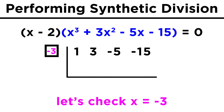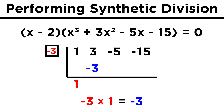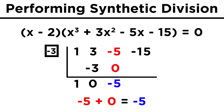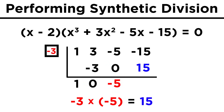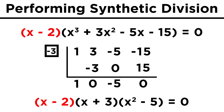Say we continue with this one, and try to see if negative three is a solution. We would perform the same algorithm as before: dropping the one down, multiplying to get negative three, adding to get zero, multiplying to get zero, adding to get negative five, multiplying to get fifteen, and adding to get zero. Once again, with a remainder of zero, we see that negative three is indeed a solution, and x plus three is therefore a factor. So leaving the x minus two as it is, we can factor this cubic term further to get x plus three times x squared minus five, which we get from the coefficients we just calculated.